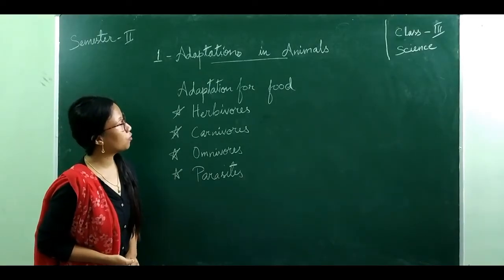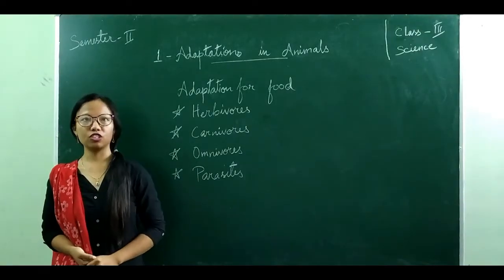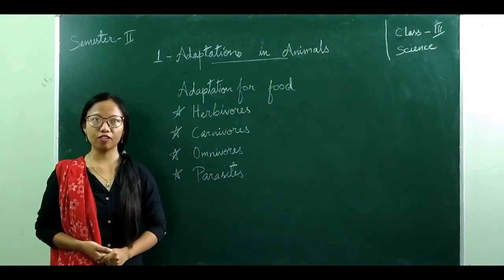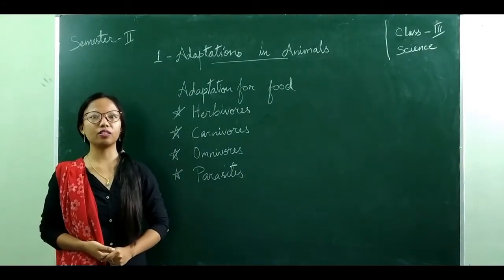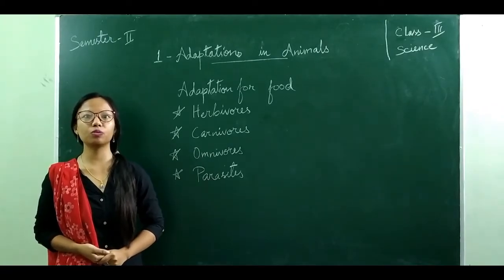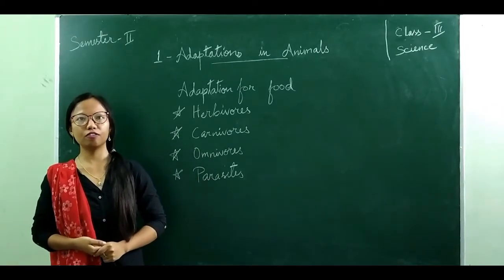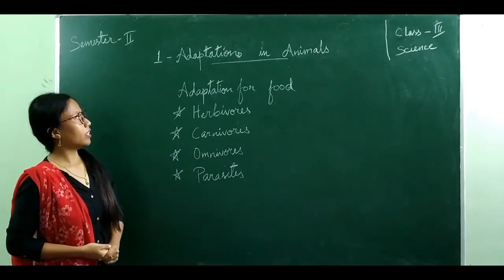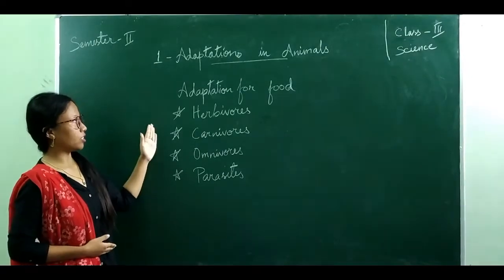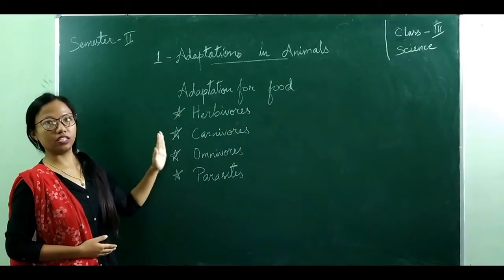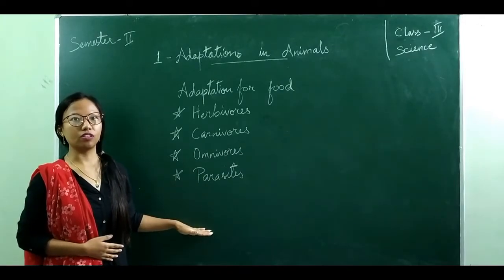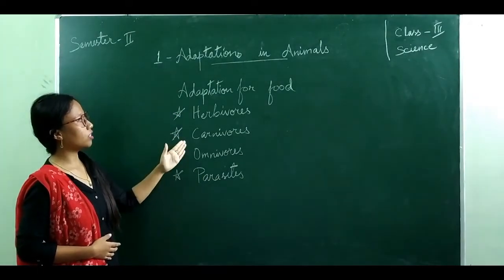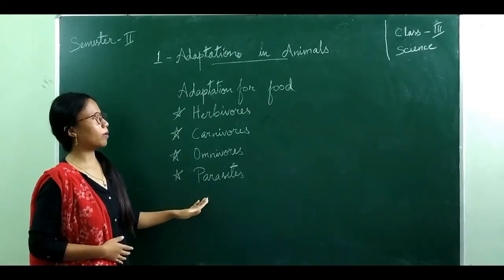Next, adaptation for food. Animals are divided into the following categories based on their food habits: herbivores, carnivores, omnivores, and parasites.